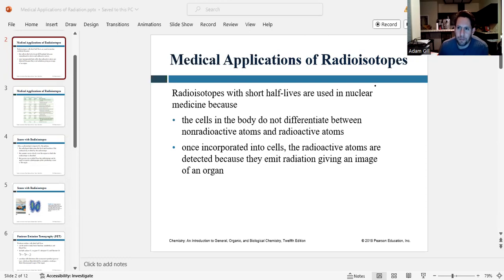As we talked about previously, radioisotopes with short half-lives are used in nuclear medicine for two reasons. The cells in the body can't differentiate between non-radioactive and radioactive atoms. And once those radioactive isotopes are incorporated into cells, the radioactive atoms are detected because they emit radiation, giving an image of an organ.